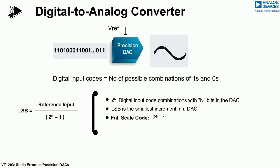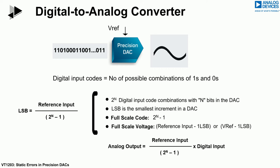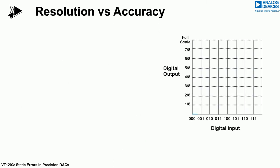Full scale is the highest output that the DAC is able to produce. Full scale translates into a value of VREF minus 1 LSB in the analog domain, since no precision DAC architecture is able to reach the actual reference value at the output. The ideal analog output of a DAC is then calculated as the product of the LSB weight by the digital input. It is important to note that the analog output of a DAC can only exist at discrete levels.